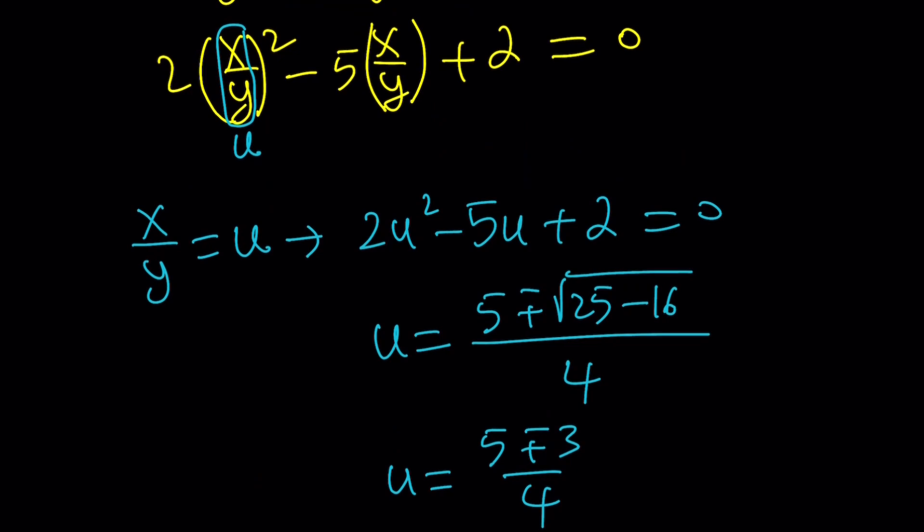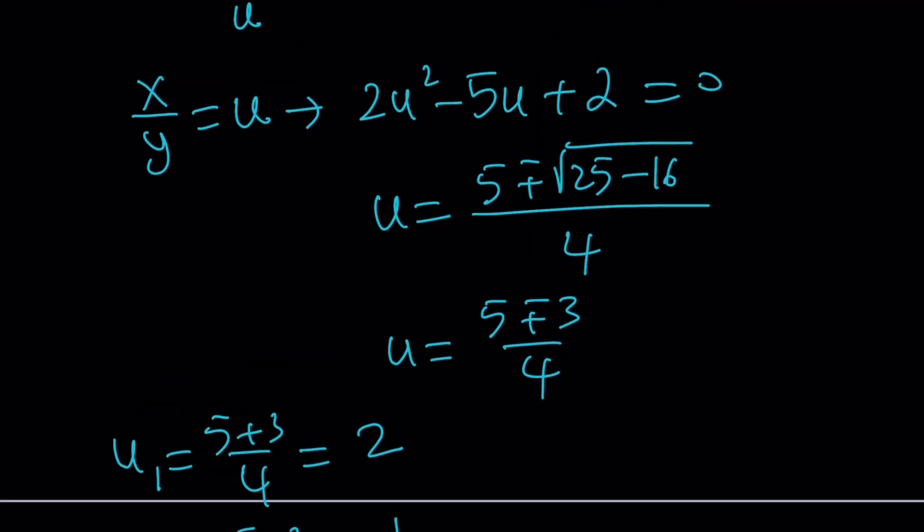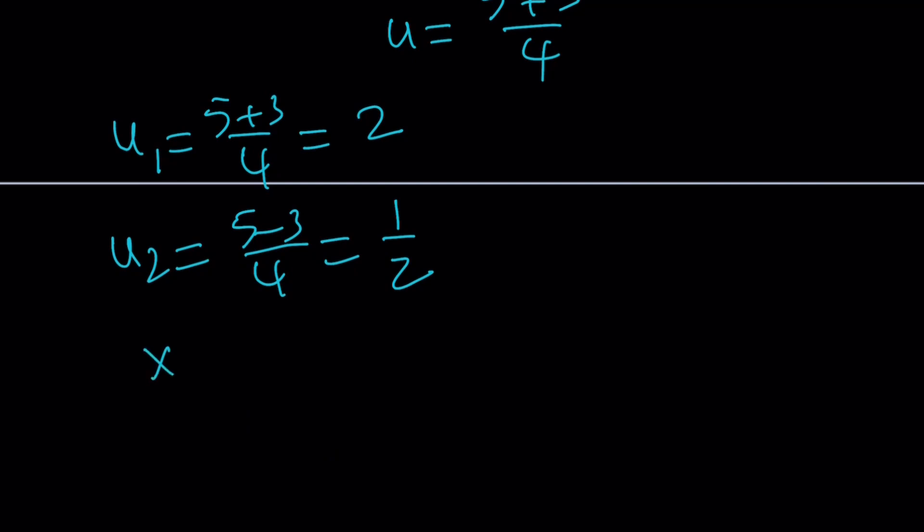One of them is going to be u sub 1 is going to be 5 plus 3 over 4, which is 2. And u sub 2 is going to be 5 minus 3 over 4. And that's 1 half. Okay. Great. So, those are the answers, right? The u values. And what are we going to do with these values?